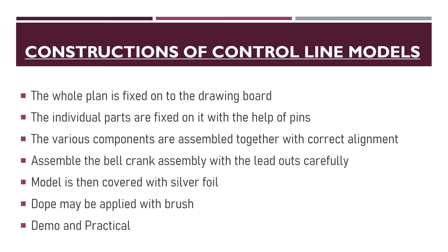Let's move on to the construction of control line models. In the initial stage, the whole plane is fixed onto the drawing board. Later the individual parts are fixed on it with the help of pins. Then the various components are assembled together with correct alignment. Later, assemble the bell crank assembly with the lead-outs carefully. After that, the model is covered with a silver foil, and then dope may be applied using a brush. Once complete, it's ready for demo and practicals.